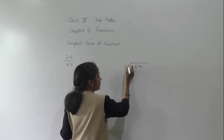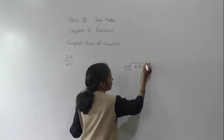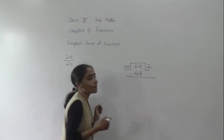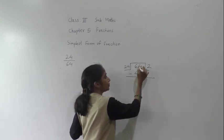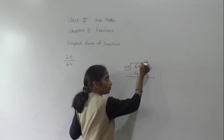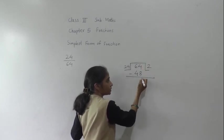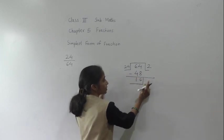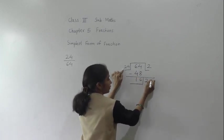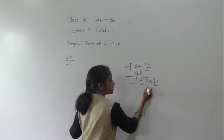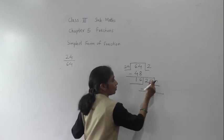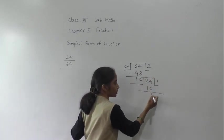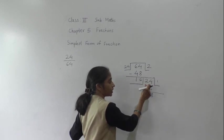Now, 64 divided by 24. 24 twos are 48. 64 minus 48: 4 minus 8 is not possible, so we take a borrow — 14 minus 8 is 6, and here we remain 5. 5 minus 4 is 1. So the remainder is 16.